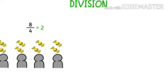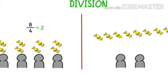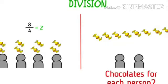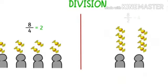Now let's say instead of 4, there are 2 people now. How will we divide 8 chocolates between 2 people? How many chocolates will each person get? You are absolutely correct. Each one will get 4 chocolates.